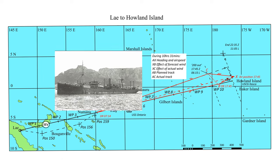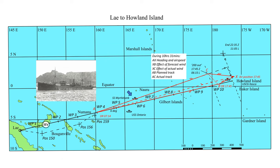Is there verification for the 6-degree offset track? Yes, there is. At about 1030 GMT, the radio operator at Nauru Island heard a woman's voice make a radio report of a ship in sight. This was Earhart, possibly seeing the SS Myrtle Bank — a ship inbound to Nauru — at a position about 1.4 degrees south, 166.45 degrees east, exactly on the 6-degree-north deviated track.